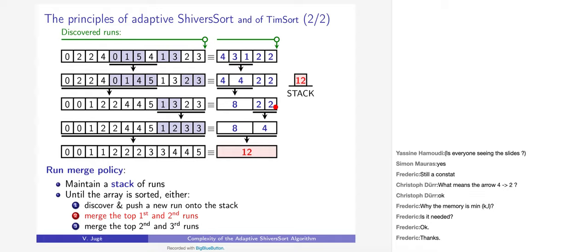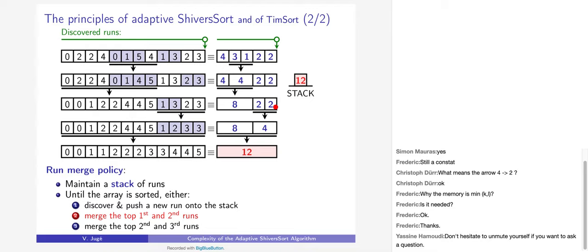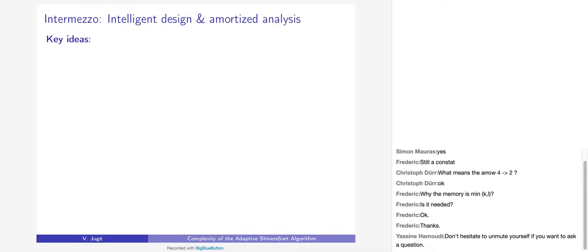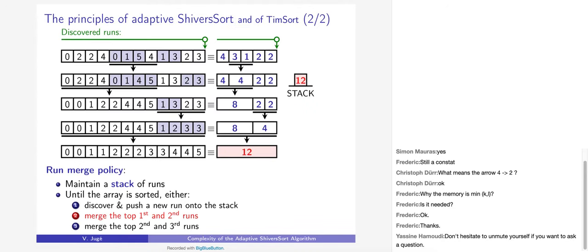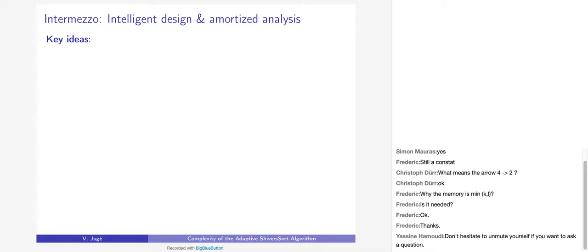Before stating the exact rules, let me explain the ideas that led to them — specifically, which choices yield low merge cost. The key idea is that each run should pay its share of the total merge cost, and when you sum all those shares you get the nH + O(n) bound. In particular, each run pays O(r) to enter the stack — the run-entry phase — and the sum over all runs gives O(n).